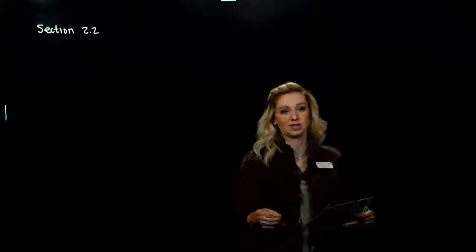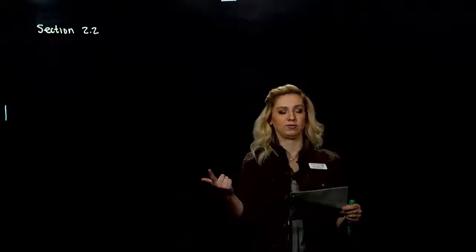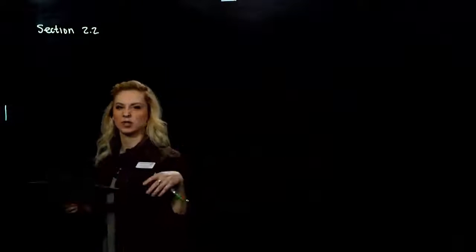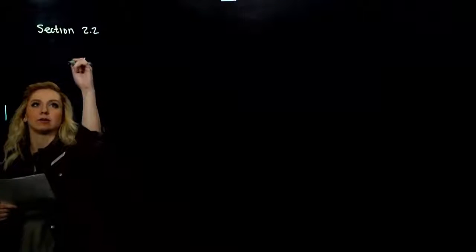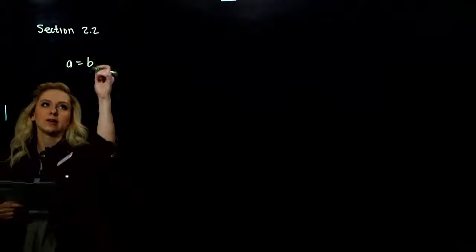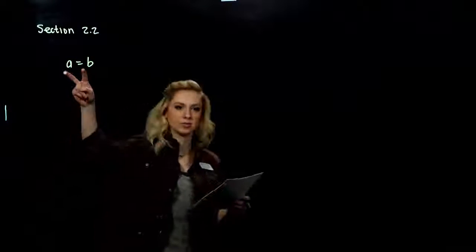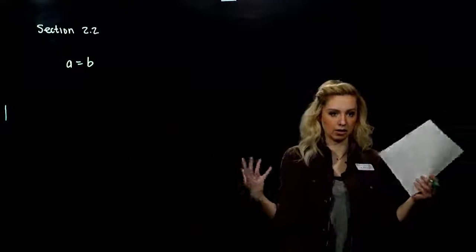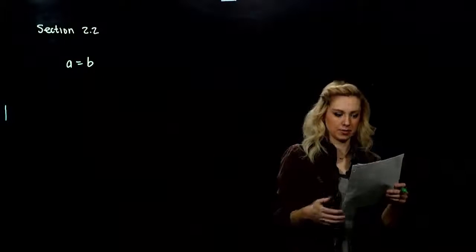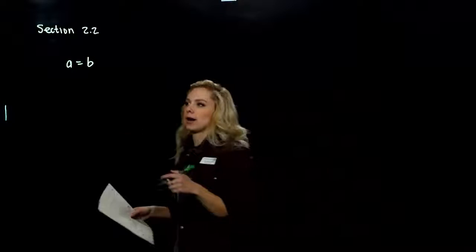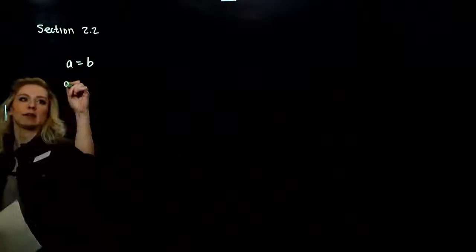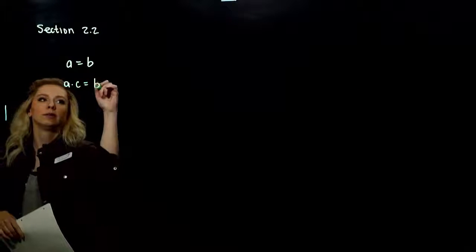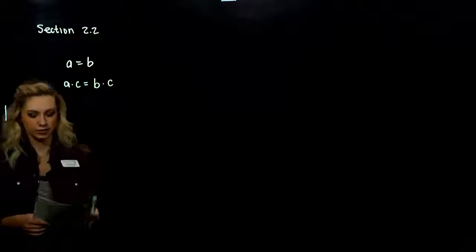We talked about solving equations using the addition and subtraction principle, so what do you think we're going to look at next? Multiplication, and eventually division. But the first one we're going to talk about is multiplication. If I start out with something I'm assuming is true — A is equal to B, whatever A and B are, they have to be the same thing — if I multiply both sides by the same exact quantity, is it still equivalent? Is it still true?